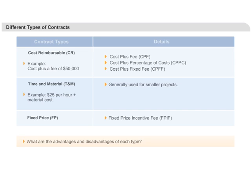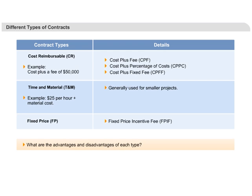There are basically three types of contract: either it's cost-based, or time- and material-based, or it's fixed-price-based.